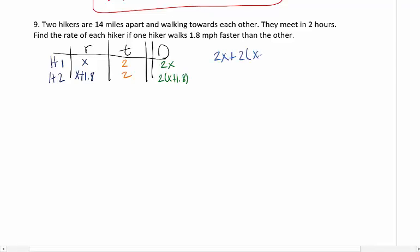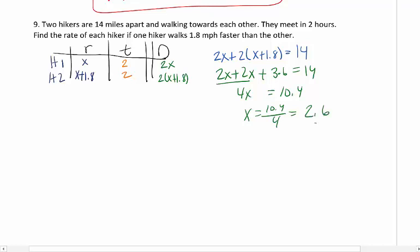This is essentially the same setup as above on number 8. So we multiply across. I get 2x and I get 2 times x plus 1.8. The total distance is 14, so we add them together. This is a concept from that first test, so this is also good review. I'm going to get rid of my parentheses. Get 2x plus 2x plus 3.6. Add my like terms together, subtract the 3.6 from both sides. When I subtract that I get 10.4. Divide 10.4 by 4, and I get 2.6.